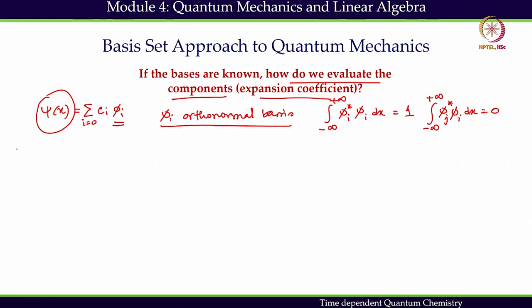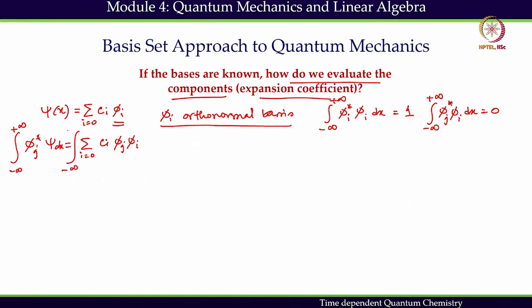To find c_i, we use a trick that will be used on many occasions. We multiply the expansion equation by phi_j* from the left, and then integrate from minus infinity to plus infinity over the entire space. We are continuing with a one-dimensional problem; one can develop understanding in one dimension and then translate that idea to three-dimensional problems at a later stage.